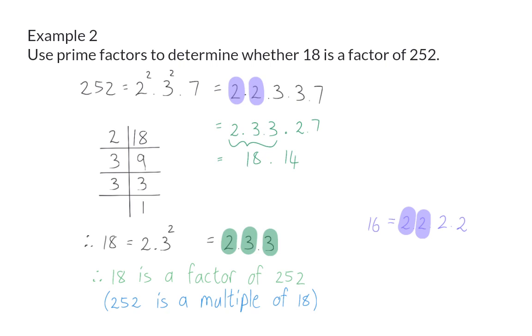The other two 2s are not available, that means that 16 is not a factor of 252, because we cannot form the value 16 by making use of only the prime factors of 252.